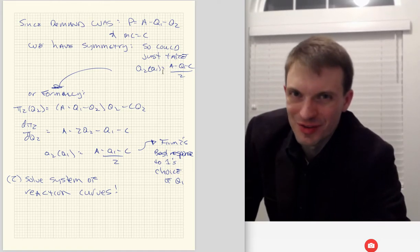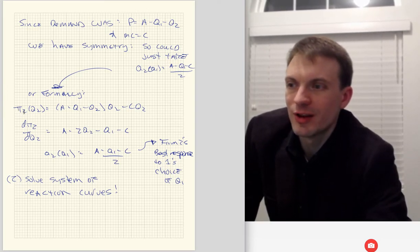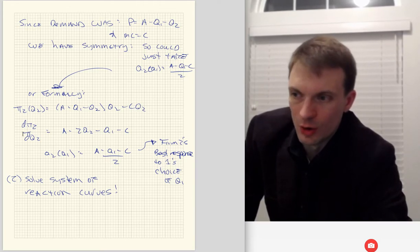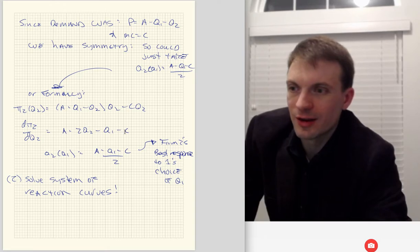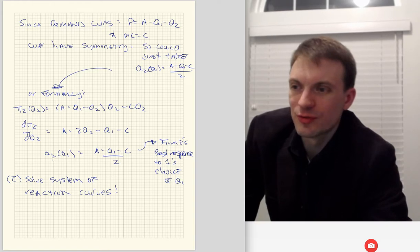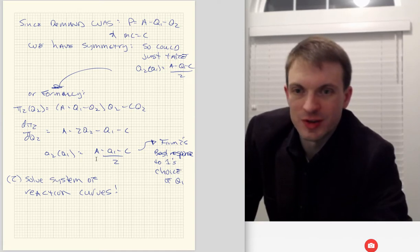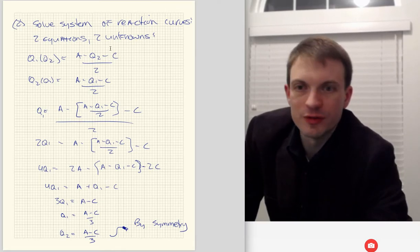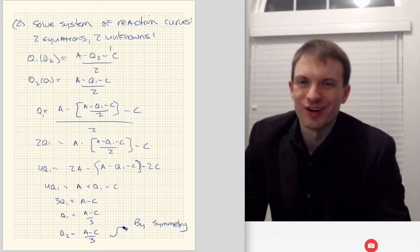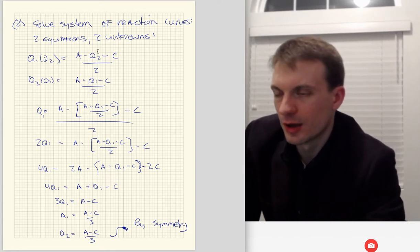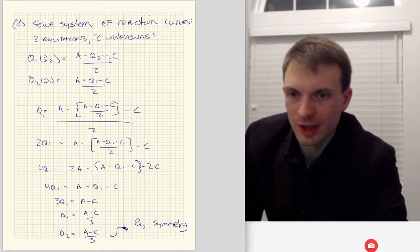But let's actually do the work and convince ourselves that's accurate. Firm 2's profit as a function of Q2: A minus Q1 minus Q2 times Q2, minus C times Q2. Taking the partial with respect to Q2, we get something that looks eerily familiar — firm 2's reaction to firm 1's choice, giving us firm 2's best response. Now that we've got each firm's reaction curves — each firm's best response functions — we've got a system of two equations in two unknowns. Solving this system, we'll find a fixed point: a Q1 and Q2 such that when you evaluate the respective reaction curve, you get the correct Q1 or Q2 back.